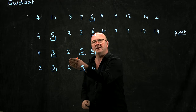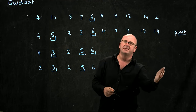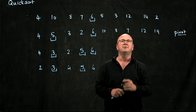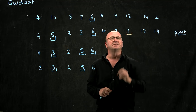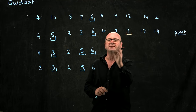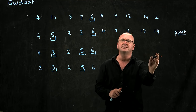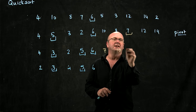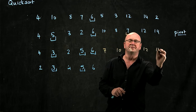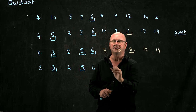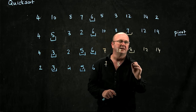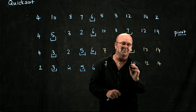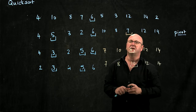We've done the left-hand side of the list. Now we do the right-hand side the same way. We choose a pivot point — in this case let's choose the 7 — and move the smaller things to the left of the 7 and the larger things to the right. So we end up with the 7, then 10, 8, 12, and 14, which is another pivot point. We move the smaller things to the left and the larger things to the right, and now the list is sorted.